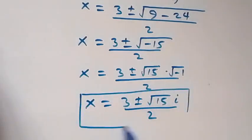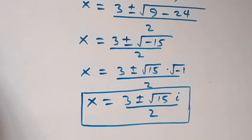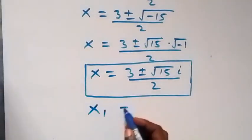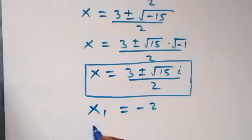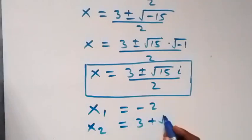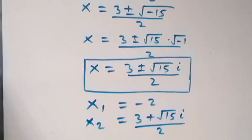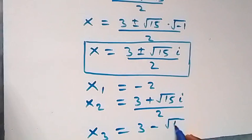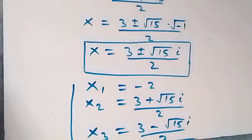From here we have two complex solutions. So altogether we have three solutions: x₁ equals minus 2, x₂ equals (3 plus root 15 · i) over 2, and x₃ equals (3 minus root 15 · i) over 2. These are the solutions to this given problem.